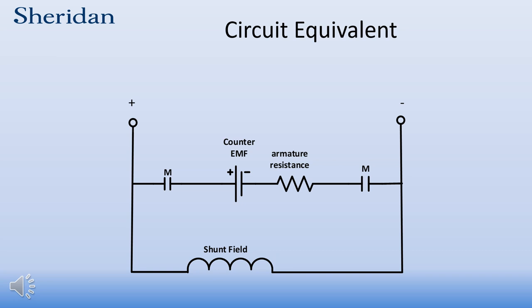This is a circuit equivalent of a shunt motor as the armature turns. There is an armature resistance in series with a generated voltage we call counter-EMF, or CEMF. Note the polarity of the counter-EMF — its positive is on the same side as the positive of the supply. This is the same as connecting two supplies in parallel with a resistance in series with one of them. If the counter-EMF is less than the supplied voltage, current flows from the negative of the supply through the armature to the positive of the supply.